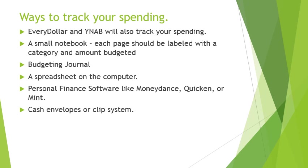You can also use a spreadsheet on your computer or personal finance software — something like an electronic check register. We use a simple software called MoneyDance, which is similar to Quicken or Mint. We manually enter what we spend, categorize it, and it sums things up. In our household, we use MoneyDance to track spending and a spreadsheet for our budget, and we meet once a month to reconcile.